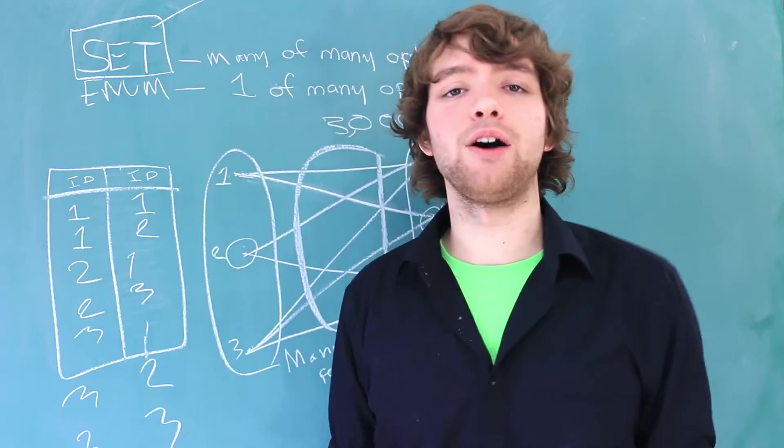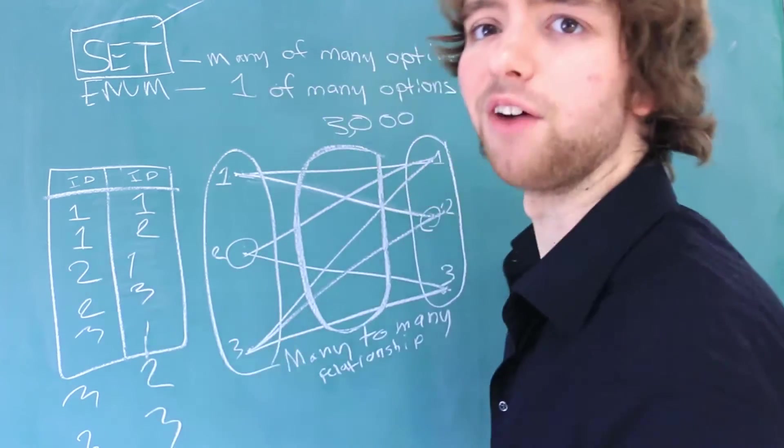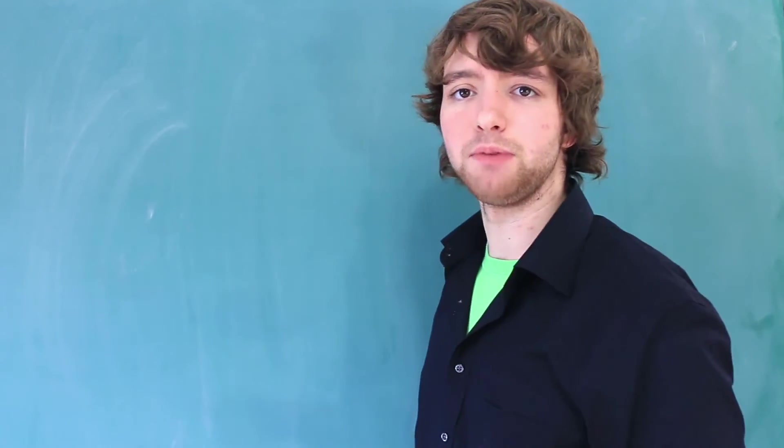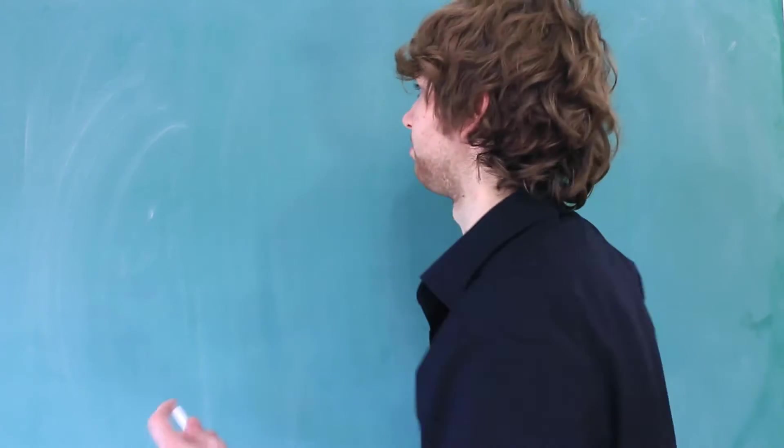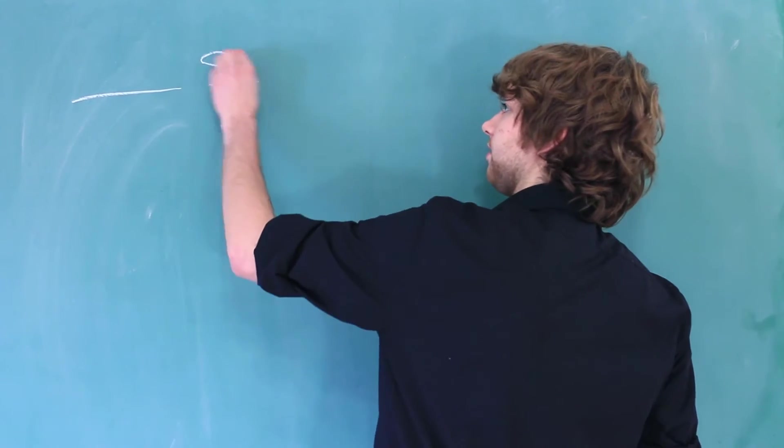Now, let's talk about how to actually use this data type in case you do decide to use it. Let me clear off this board for you. You declare this data type just like you would the enum data type. So within a create table statement, or an alter table statement, for example, you would give the column, and then you'd give the data type, and it would look something like this.